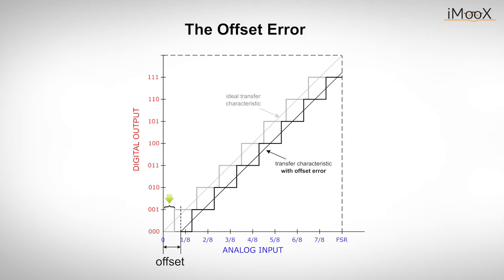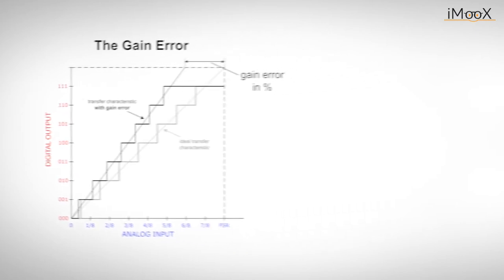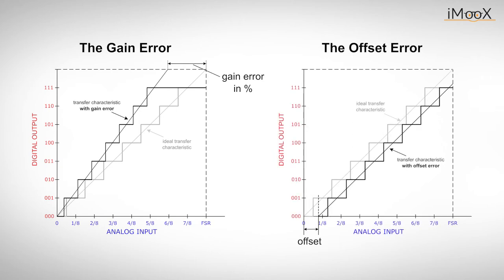Another common error is the so-called gain error. Ideally, our transfer curve has a slope of 45 degrees. If a gain error occurs, the slope changes. The gain error is defined as the difference between the real and the ideal analog input value, which causes the last change in the digital output code. In order to compensate for the gain error, an offset error that may occur must be adjusted beforehand.